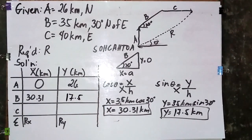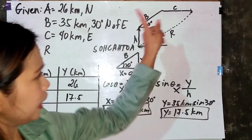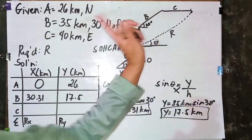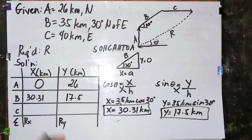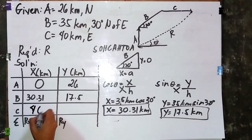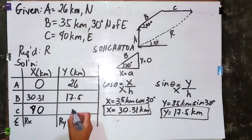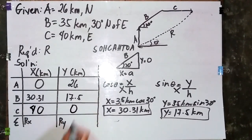For Vector C, which is 40 kilometers east, it lies on the x-axis. So we place 40 kilometers in the x column, and y equals zero.